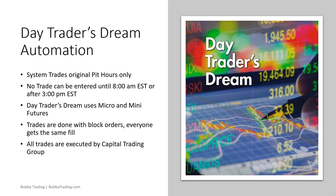The currencies open up at 8:20 Eastern, gold at 8:00 Eastern, crude oil at 9:00 Eastern, and the indexes at 9:30 Eastern. We make no trades until those pits were actually open because we want to be where there is liquidity and volume. No trade is entered before 8:00 AM Eastern or after 3:00 PM. All trades are done in block orders — everybody gets the exact same fill. We use micros or minis with two versions. All trades are executed by Capital Trading Group, based in Chicago.